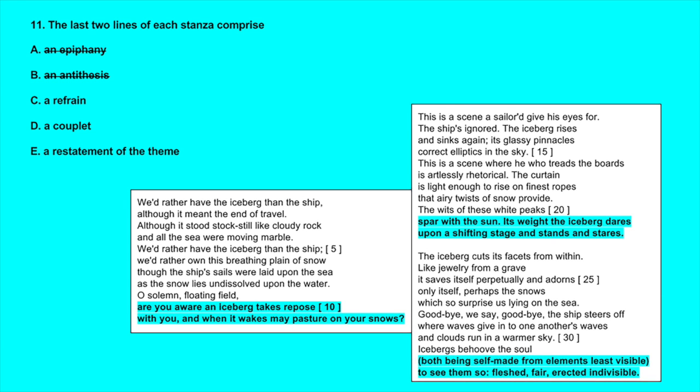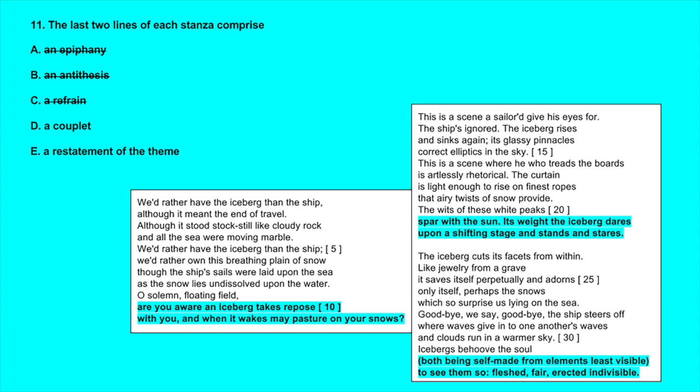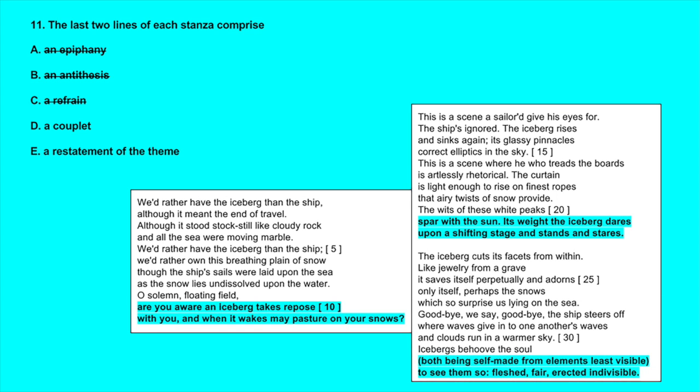D, a couplet - a couplet is a set of two rhyming lines that usually share the same meter. These sets of lines do rhyme and the meter is very close in each set, so this answer is the best so far.